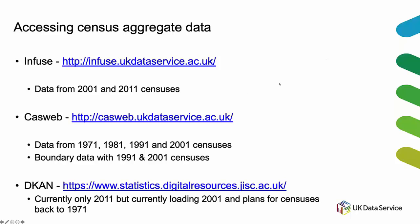Accessing the census data through the UK Data Service, we have three interfaces to aggregate data. Infuse has data from 2001 to 2011. Web is a very old interface but it does have data from 1971 up to 2001, and also has integrated boundary data with the 1991 and 2001 censuses. DCAN is our latest interface - it's our solution for delivering bulk data, so whole tables. It's currently only got 2011 data, but we are loading 2001 data now and plan to load all the data back to 1971.